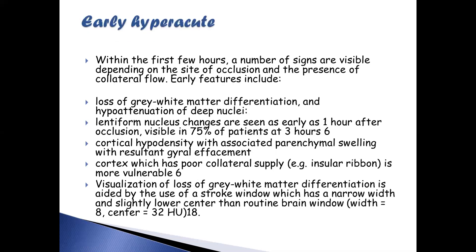In the hyperacute phase, within the first few hours, a number of signs are visible depending on the site of occlusion and the presence of collateral flow. Early features include loss of gray-white matter differentiation and hypoattenuation of deep nuclei. Lentiform nucleus changes are seen as early as one hour after occlusion and are visible in 75% of patients at three hours.